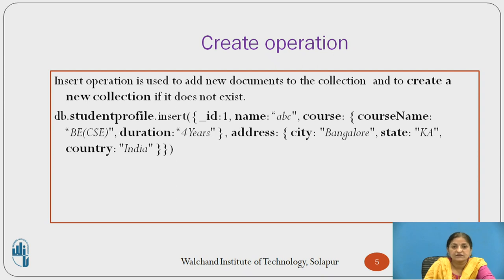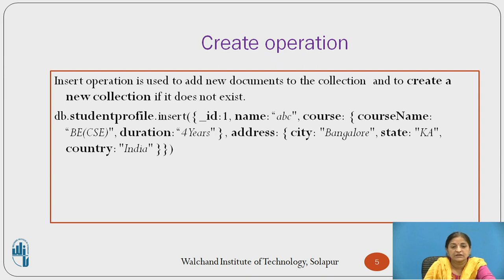Now we move to the Insert operation, used to add new documents into the collection and to create a new collection if it does not exist. To insert one document into the student_profile collection, use db.studentprofile.insert(). The first field, underscore_id, is an object ID unique to every document in the collection. We can set its value to 1 for the first document. Then we have fields: name, course, and address.